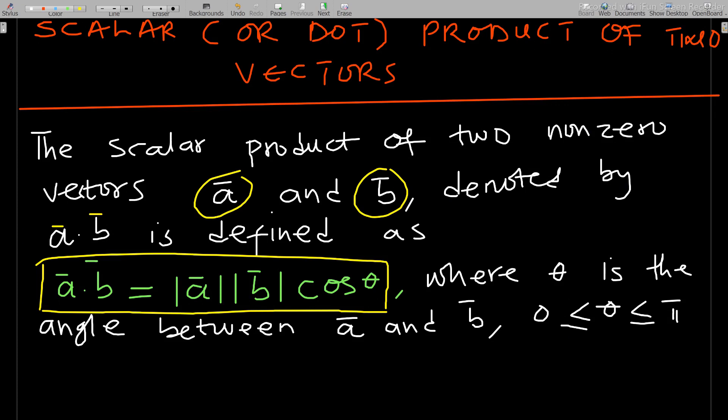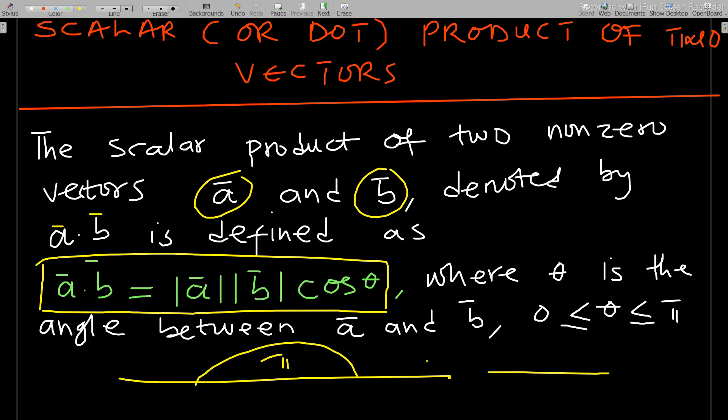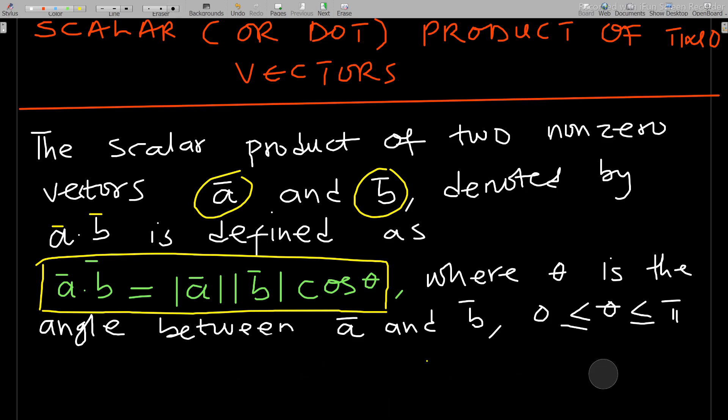Theta lies within zero and pi, so theta can be zero or also pi. If you have two vectors on the same straight line, they are separated by an angle of 180 degrees, which is pi. If they are not on the same line, the angle between them could be zero.